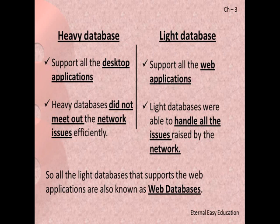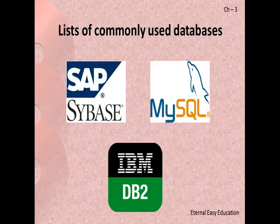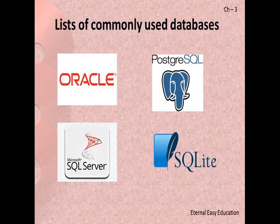A database is a collection of tables that maintains data in a table format. It can be heavy or light — heavy supports desktop applications and light supports web applications. The emerging technology is making users rely more on web applications, so light databases that support web applications are known as web databases. Some commonly used databases listed in your book include SAP, Sybase, MySQL, DB2 by IBM, Oracle, SQL Server, and SQLite.